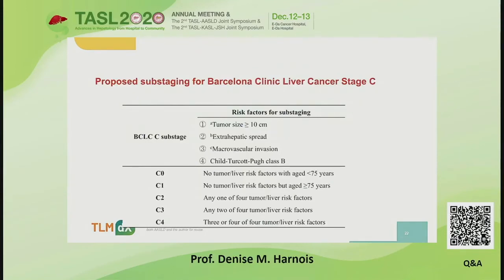Their proposed sub-staging system for Barcelona Clinic Liver Cancer stage C looked at four risk factors: tumor size greater than or equal to 10 centimeters, evidence of extra-hepatic spread, macrovascular invasion, and Child-Pugh class B. A C0 sub-stage would have no tumor risk factors and age less than 75 years. C1 would have no tumor risk factors but age greater than or equal to 75 years. C2 would have 1 of the 4 risk factors. C3 would have 2 of the 4 risk factors. And C4 would have 3 or 4 of the risk factors.